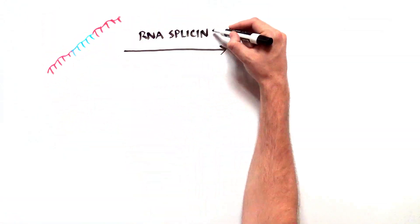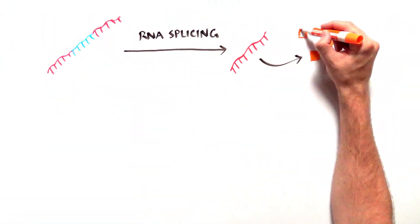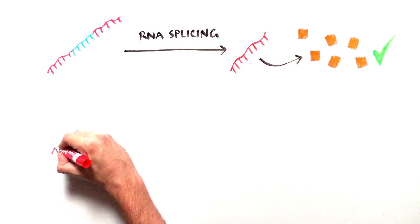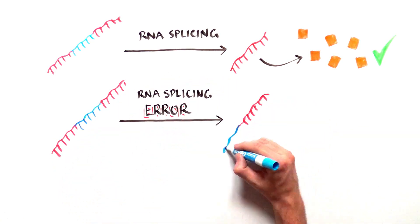While RNA editing is critical for generating the hundreds of thousands of proteins that keep us alive, splicing errors can lead to devastating health problems.